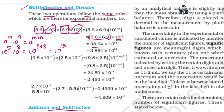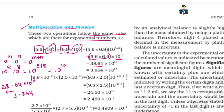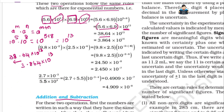Now, looking at the decimal placement: we have 38.64 × 10^13. We need to move the decimal place — moving from 38.64 to 3.864, we shift one decimal place to the left.